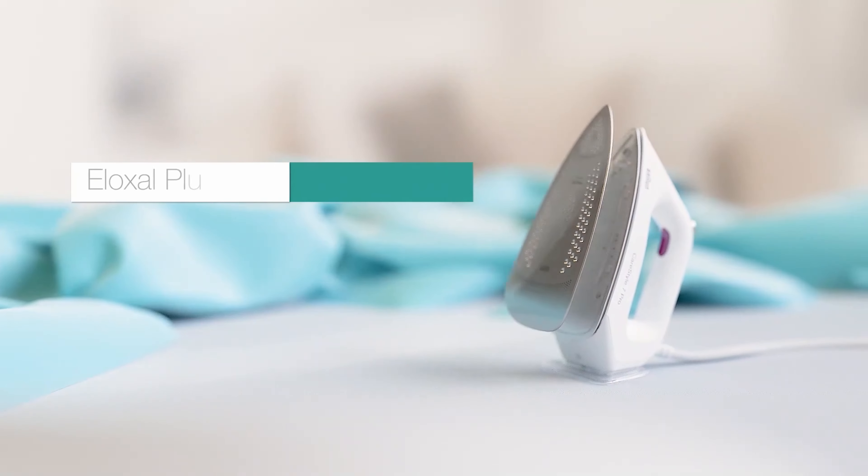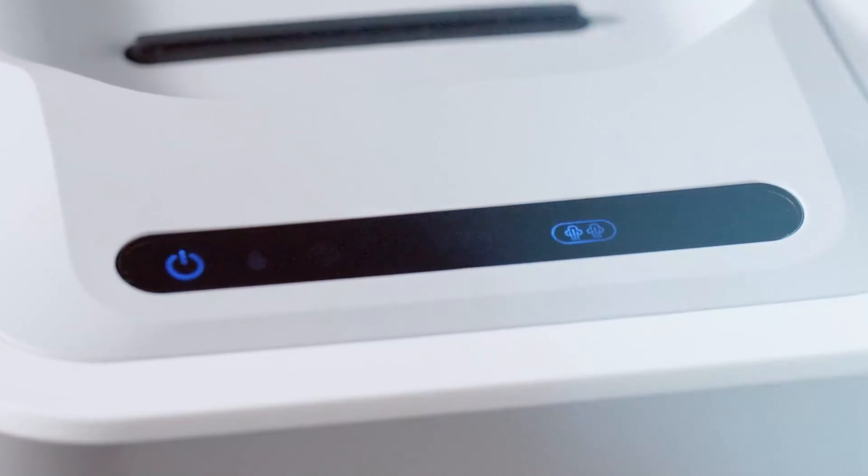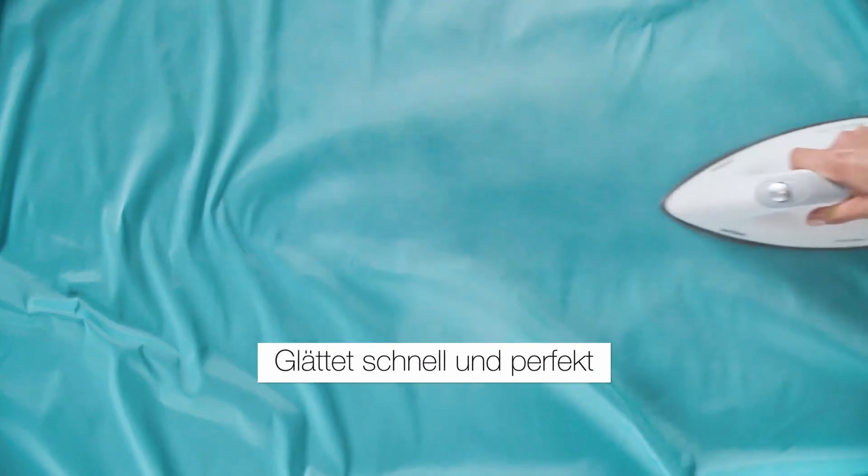The ironing station shines with its patented rounded 3D sole plate, which even glides over uneven surfaces like buttons and pockets compared to conventional soles.